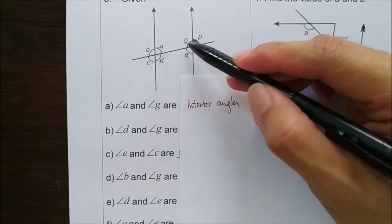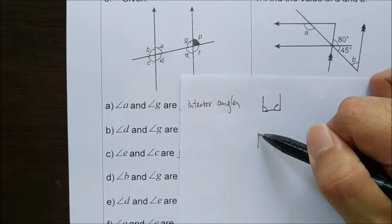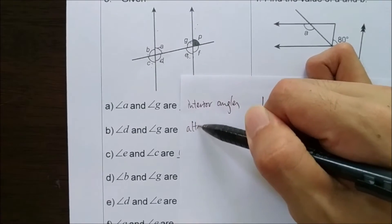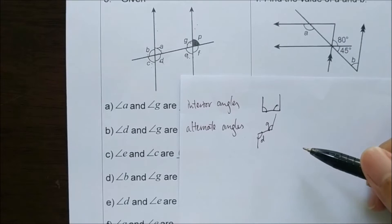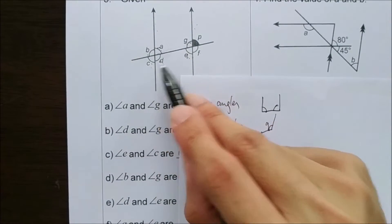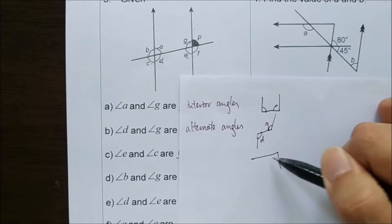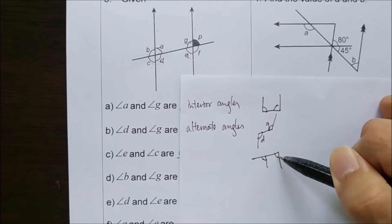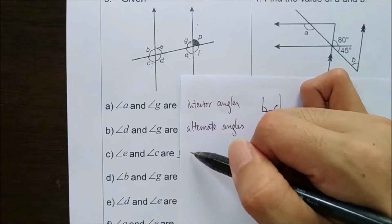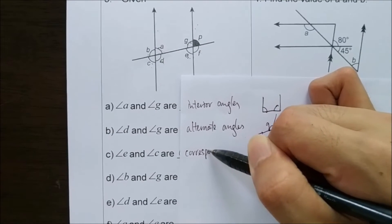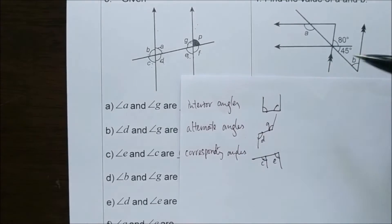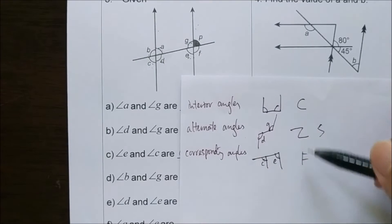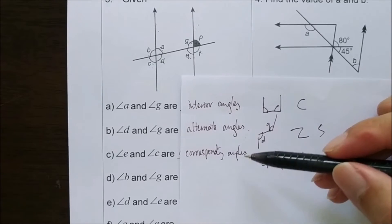Whereas D and G — you can relate these two angles using the letter S or Z. So this angle and this angle, D and G, are a pair of alternate angles. E and C — you can use the capital letter F. So the two angles E and C are corresponding angles. By using the shapes C, Z or S, and F, we can identify interior angles, alternate angles, and corresponding angles.